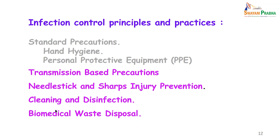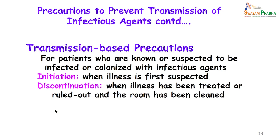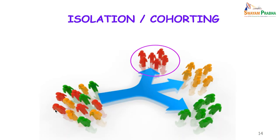We move on to transmission based precautions. These are initiated when you know or suspect that a patient is harboring an infectious agent. Initiate when illness is first suspected and discontinue when the illness has been treated, ruled out, or the room thoroughly cleaned. Whenever infection is suspected, ideally put the patient in an isolation room. If isolation is not available, place the patient at the corner of a ward, and if there are multiple patients with the same infection, cohort those patients — put them all at one site.